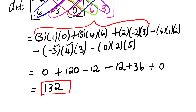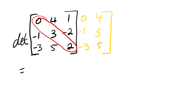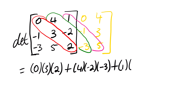Let us look at the last example. You can pause the video and try to work out the determinant of this matrix. So the determinant — the matrix has elements 0, 1, negative 1, negative 3, 4, 3, 5. The first diagonals are: 0 multiplied by 3 multiplied by 2; plus 4, negative 2, negative 3; plus 1, negative 1, 5. Done with my first diagonals.